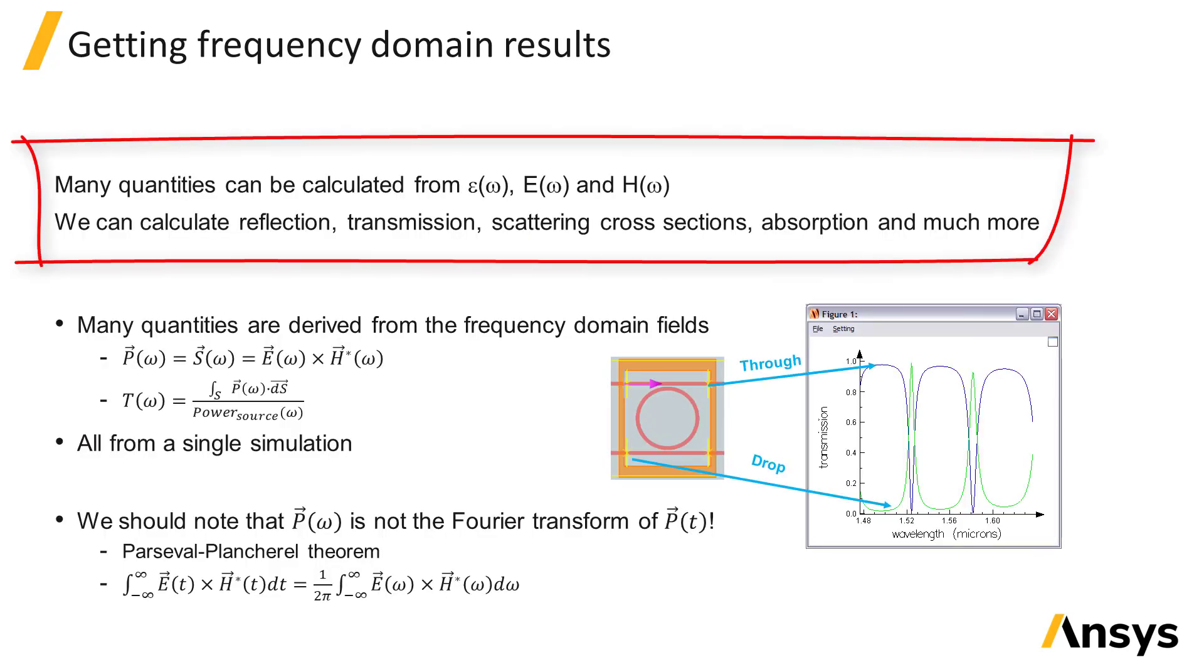We can calculate many other quantities from the permittivity, the electric field, and the magnetic field known as a function of frequency or wavelength. We can calculate reflection, transmission, scattering cross-sections, absorption, and much more.